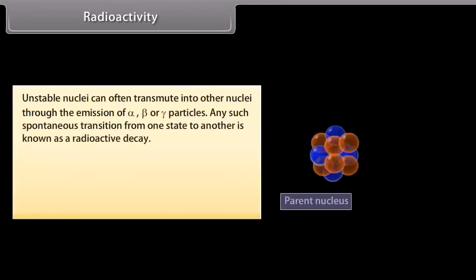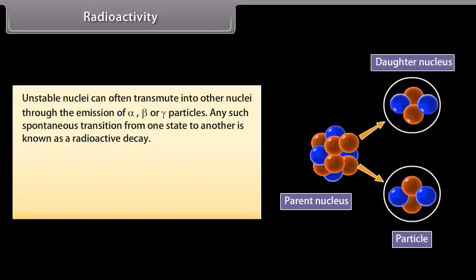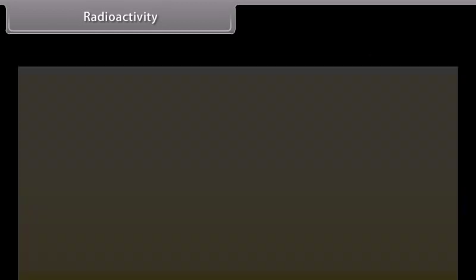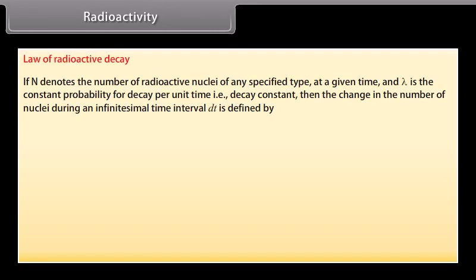Radioactivity. Unstable nuclei can often transmute into other nuclei through the emission of alpha, beta, or gamma particles. Any such spontaneous transition from one state to another is known as a radioactive decay. There are 3 types of radioactive decay: alpha decay, beta decay, and gamma decay. Law of radioactive decay: if N denotes the number of radioactive nuclei of any specified type at a given time and λ is the constant probability for decay per unit time, that is decay constant, then the change in the number of nuclei during an infinitesimal time interval dT is defined by dN is equal to N(T + dT) minus N(T), which is equal to minus N(T) λ dT.